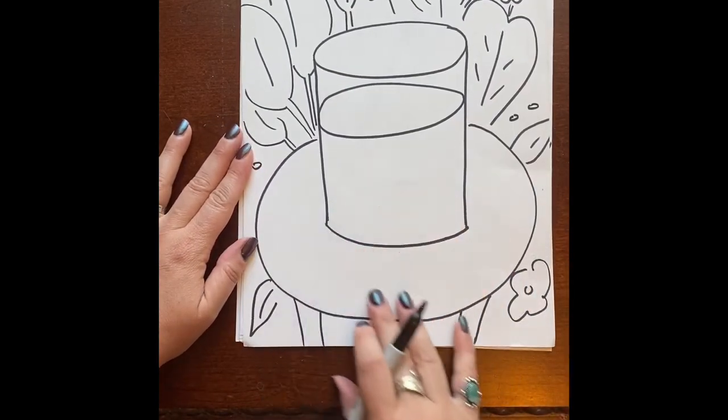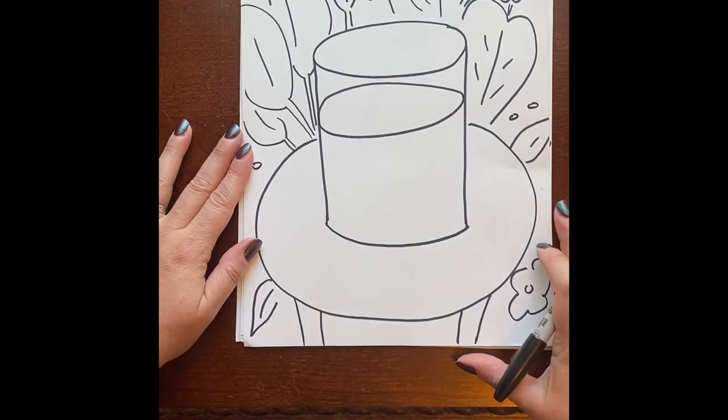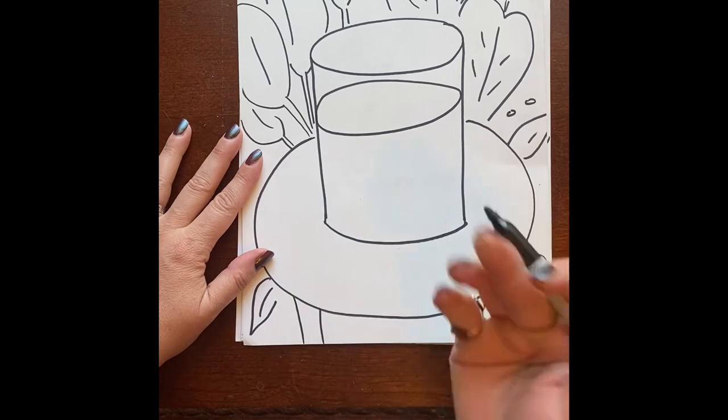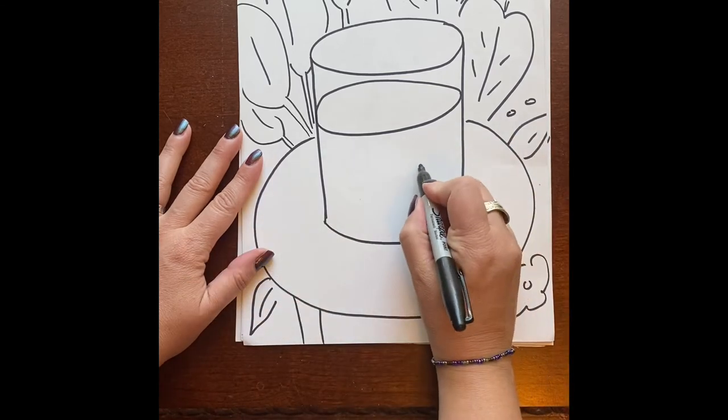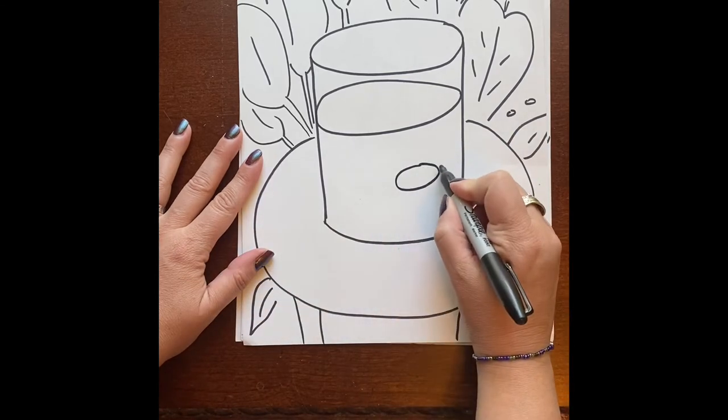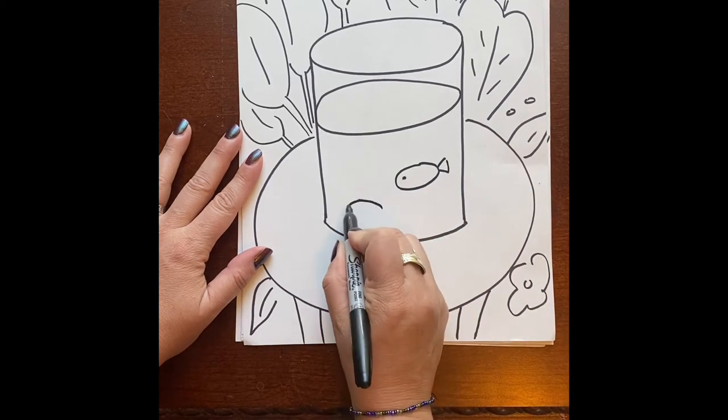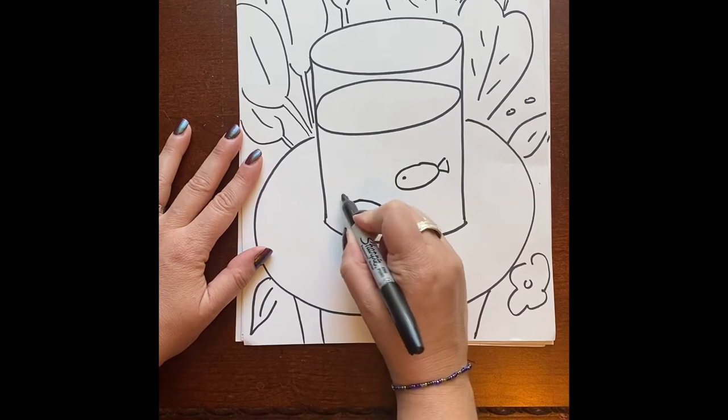All right, now we get to the part that the painting is really about: these goldfish. We're going to add some goldfish in the bottom part here. A goldfish is really easy to draw because it's an oval and it's got a little triangle tail. I'm just going to add an eye. So there's one, I'm going to add a few more.